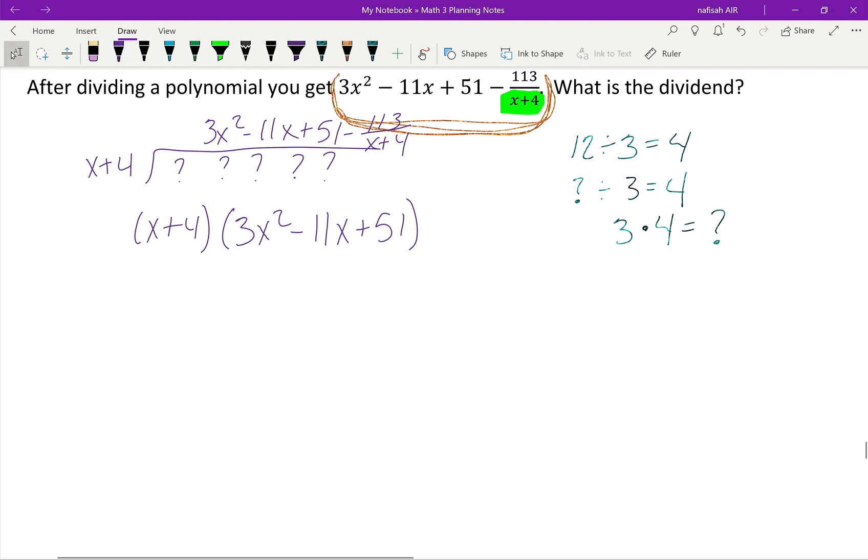Then I'm going to remember that it wasn't a perfect multiplication - I'll have to subtract the 113, the remainder that was left over. So you would do x times 3x², x times -11x, x times 51, then 4 times 3x², 4 times -11x, 4 times 51. You would end up with 3x³ - 11x² + 51x + 12x² - 44x + 204, and then don't forget to subtract 113.